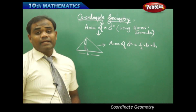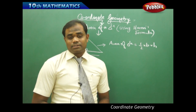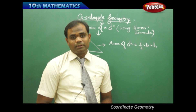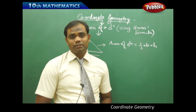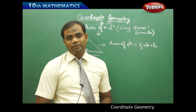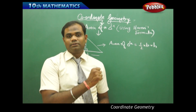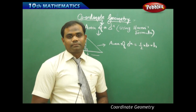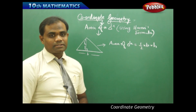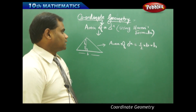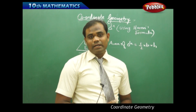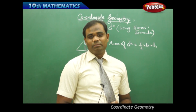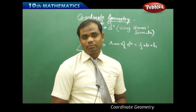But what if the height of the triangle is not given? Say for example, I have a triangle whose height is not given — then how do I find the area of the triangle with those particular dimensions? In that case, where the height is not given, an ancient mathematician called Heron has derived a formula called Heron's formula.